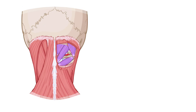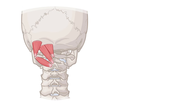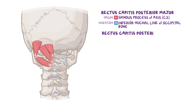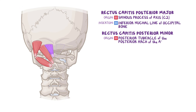Let's take a closer look at the muscles of the suboccipital region. There are four suboccipital muscles, which lie deep to the semispinalis capitis muscle. First, there's the rectus capitis posterior major, which originates on the spinous process of the axis or C2 vertebra and inserts on the lateral part of the inferior nuchal line of the occipital bone. Second, there's the rectus capitis posterior minor muscle, which originates on the posterior tubercle of the posterior arch of the atlas or C1 vertebra, and inserts on the medial part of the inferior nuchal line of the occipital bone.